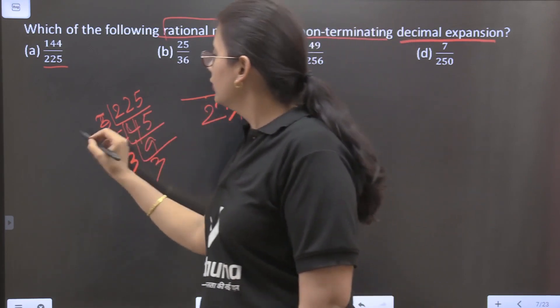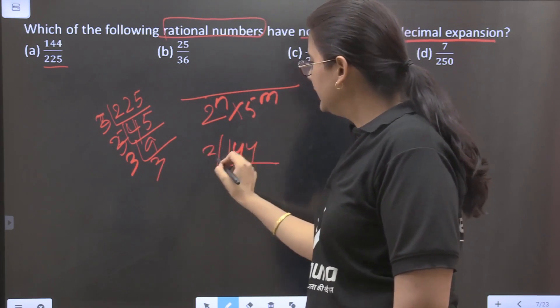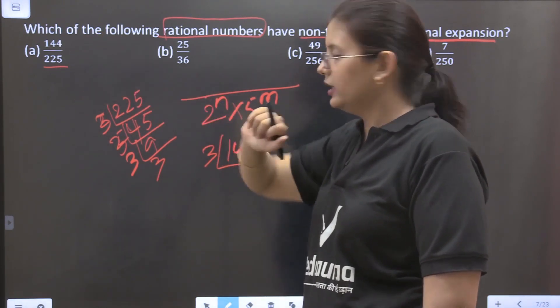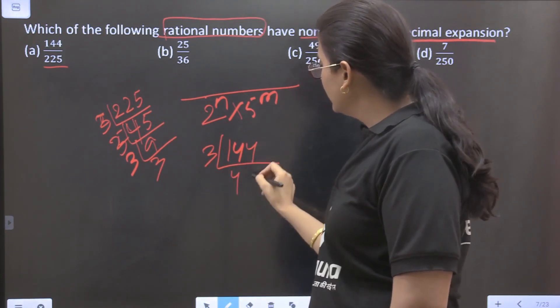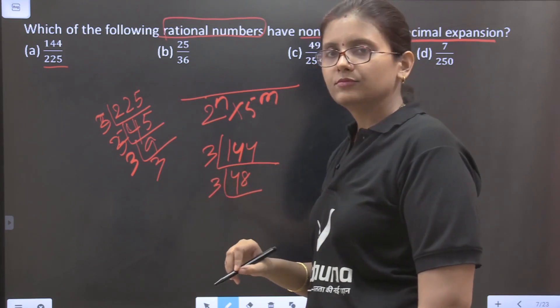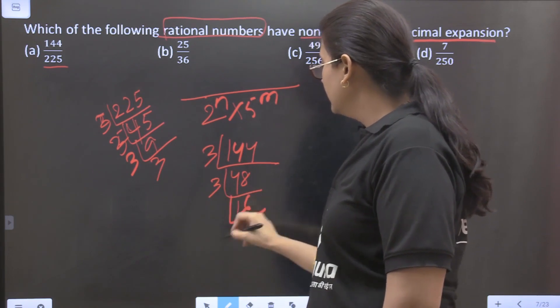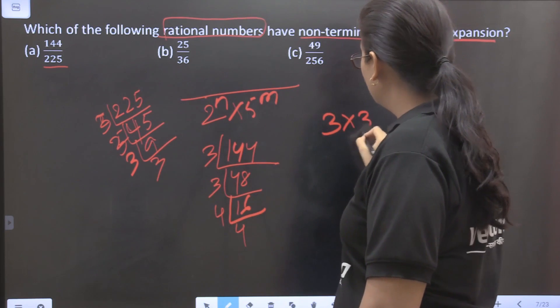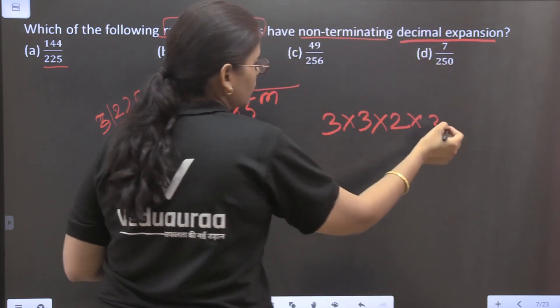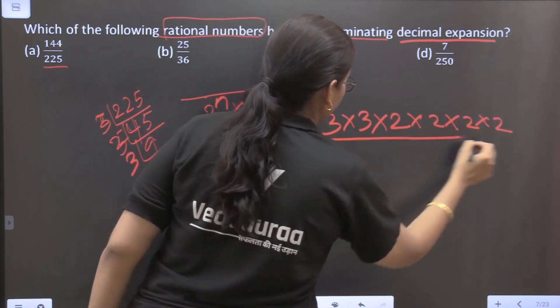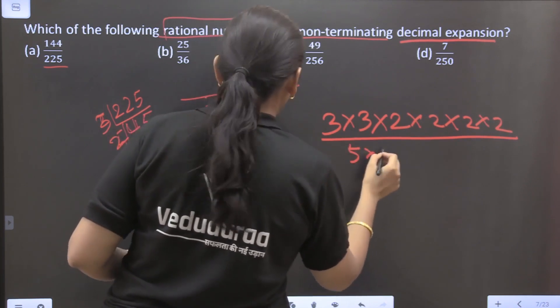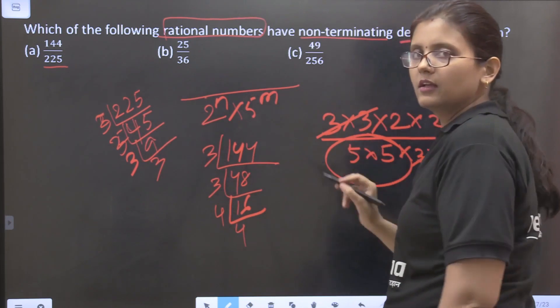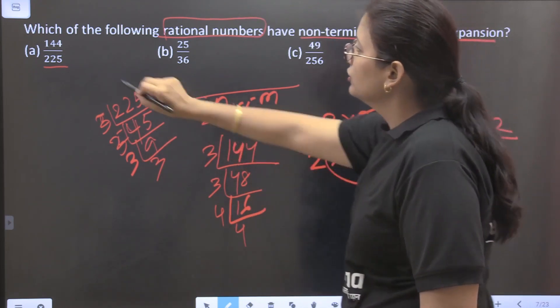Now for 144 what are the factors? So first of all we will check whether these are in the lowest form, these are co-primes or not. So here it will be 12, 4, 24, 8, again 3, so this will be 16, then 4, 4. So now if we write it as 144 equals 3 into 3 into 2 into 2, 4 equals 2 into 2 into 2 by 5 into 5 into 3 into 3. So this 3 into 3 will cancel out. So the denominator part has only 5, and this we can write 2 to the power 0, so this will be terminating.